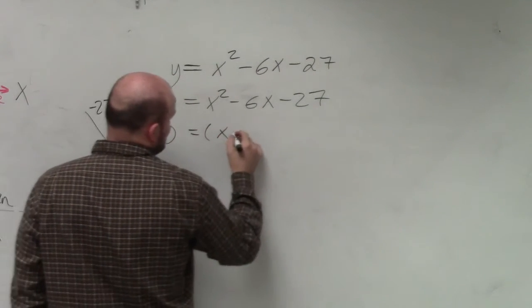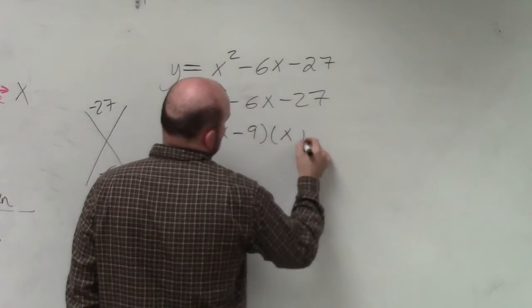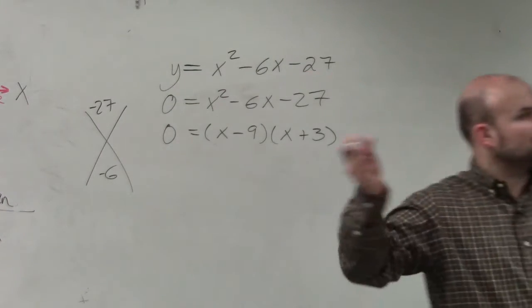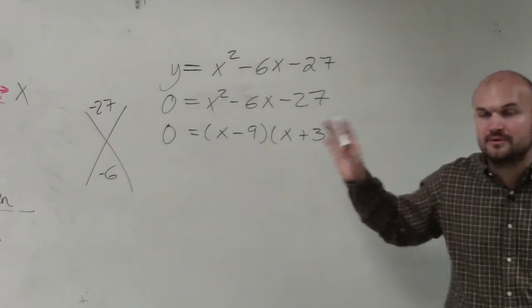Since my a equals 1, I can factor this into (x minus 9) times (x plus 3). Would everybody agree if you multiplied that out, that would give you the factored form?